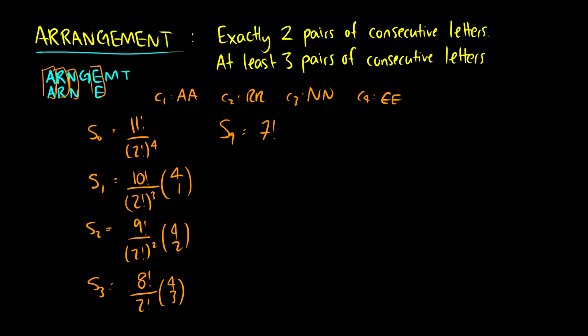Okay, so we want exactly two pairs of consecutive letters. Well we already have our S's here so we just need to figure out the formula. So exactly two is the same as S2 minus 3 choose 1 S3 plus 4 choose 2 S4 minus 5 choose 3 S5. We don't have an S5 so I didn't even need to go that far. So that's exactly two and I could plug in the numbers and come up with an answer but I have them written right here so we're not going to bother plugging them in.